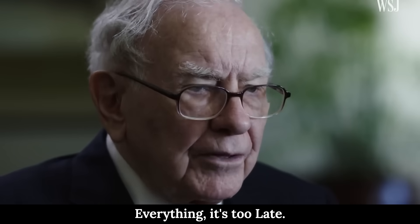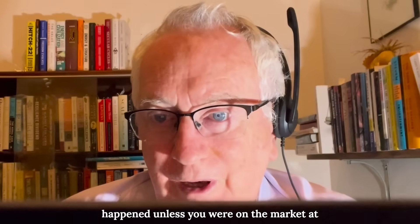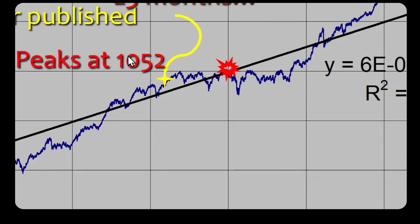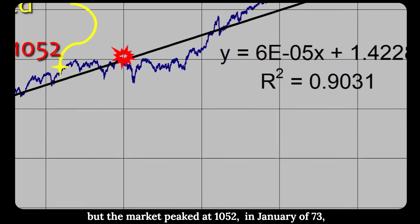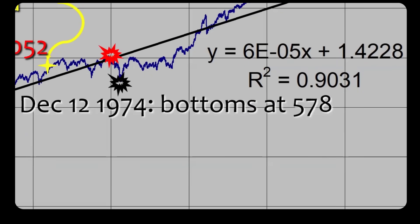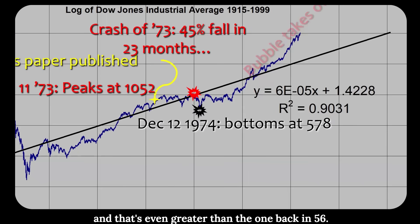If you wait till you know everything it's too late. Now most of you wouldn't even know this happened unless you were on the market at the time, but the market fell by almost 50 percent. It's hard to see because the log scale hides the depth of a fall, but the market peaked at 1052 in January of 73 and by December of 74 it's 578. And that's the beginning, then you have a bubble which takes off in 1982 that's even greater than the one back in 56.